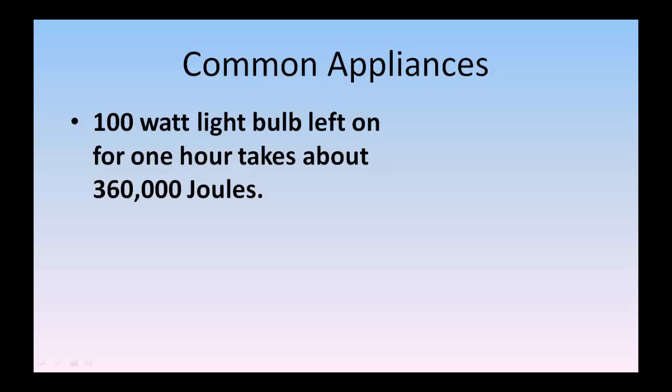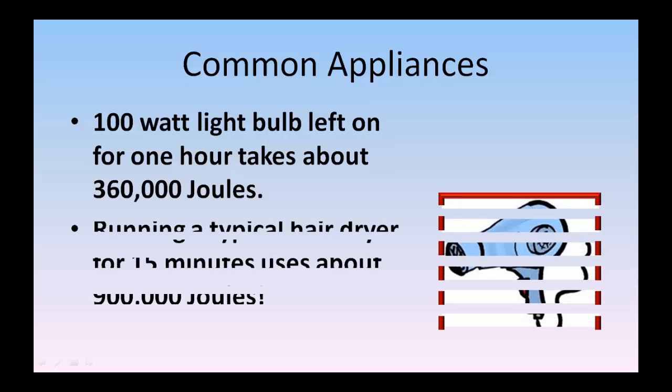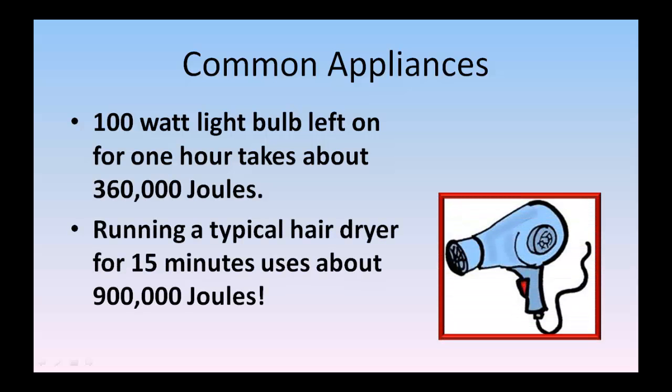One of the common appliances that we talk about joules, a 100-watt light bulb, that's the brighter light bulbs that you might have in your room, and you've got it on for one hour, that uses about 360,000 joules. Running a typical hair dryer for about 15 minutes uses about 900,000 joules. So it takes almost a million joules for a hair dryer in 15 minutes. That's why if you're trying to cut back on energy, your hair dryers, any kind of clothes dryers, any kind of heat element really takes a lot of energy.